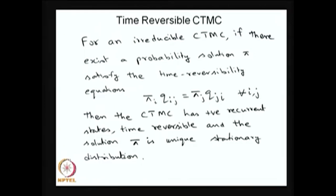This result says: for an irreducible CTMC, if there exists a probability solution π satisfying the time reversibility equation — where q's are rates and π's are the probability solution — then that CTMC has positive recurrent states and is called time reversible, and π is the unique stationary distribution.